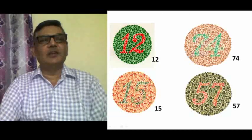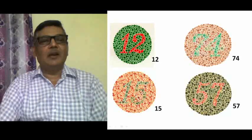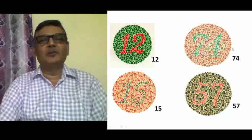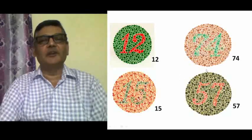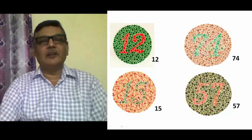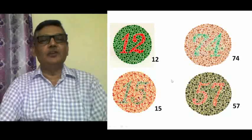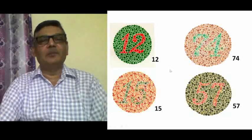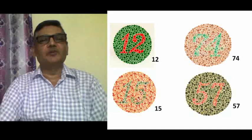A normal vision person will be able to identify the specific figure. In the first circle the number 12 is written, in the lower one it is 15, in the upper right it is 74, and in the lower right it is 57. Individuals with normal color vision can identify these figures, whereas those who suffer from red-green color blindness will not be able to distinguish them.